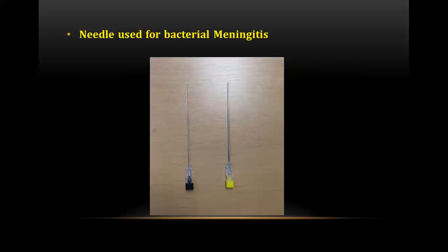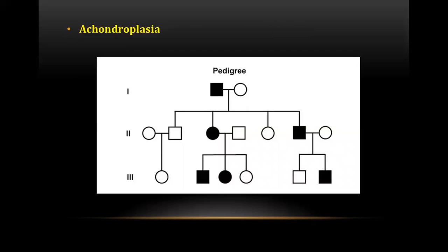The next question was an image-based question in which needles were shown. These needles are used for bacterial meningitis. In bacterial meningitis, bacteria penetrate the blood-brain barrier, and endotoxins and inflammatory mediators initiate a CSF inflammatory response. As a consequence, there is an increase in brain water content and an increase in intracranial pressure. These needles are used for direct needle aspiration.